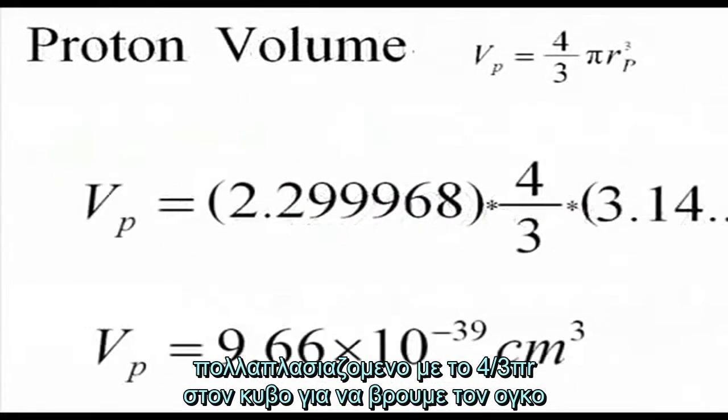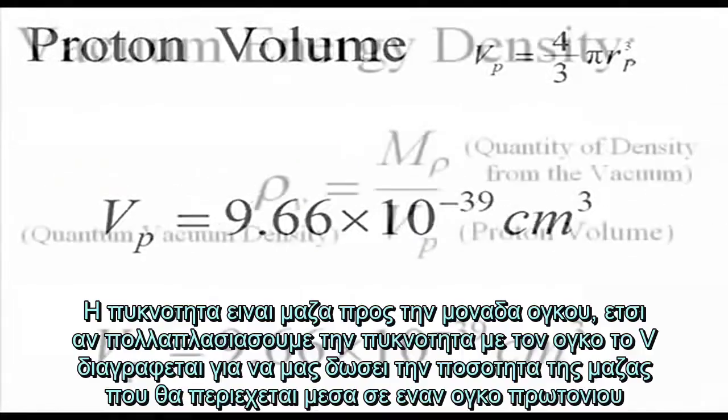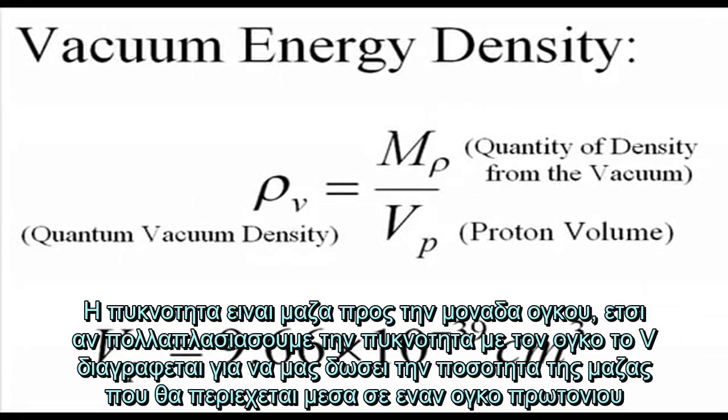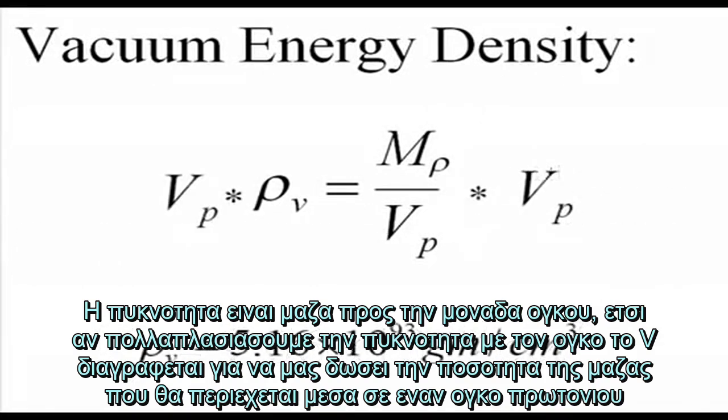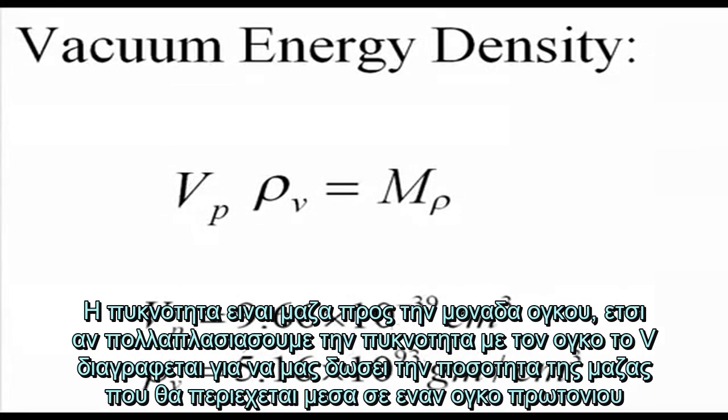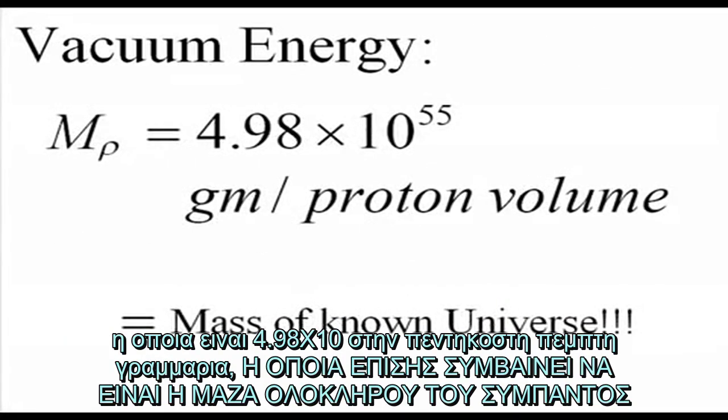Multiplied by 4 thirds pi r cubed to get the volume. A density is mass per unit volume, so if you multiply a density by a volume, the V's cancel to give the amount of mass that would be contained within a proton volume, which is 4.98 times 10 to the 55th grams.